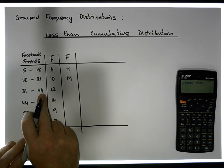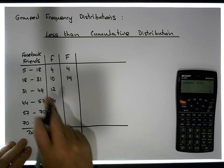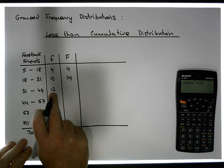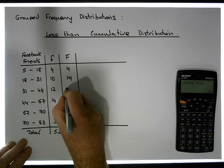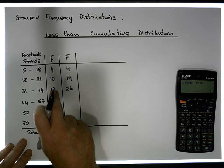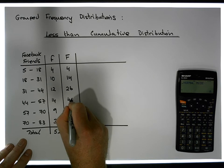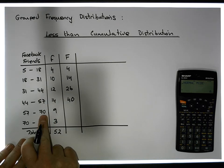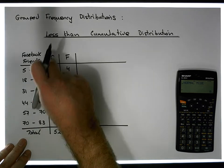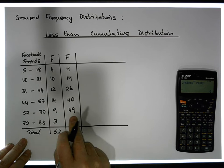With respect to the third class, how many observations are less than 44? There are 12 in that class, plus the previous 14 that we've counted, giving us 26. With respect to the next class, how many observations are less than 57? There are 14 plus the 26 from the previous classes, giving us a total of 40 observations. How many are less than 70? There are 9 plus the previous 40, giving us 49 observations.